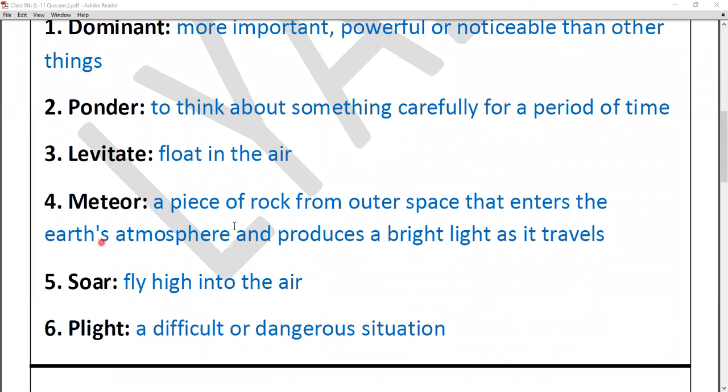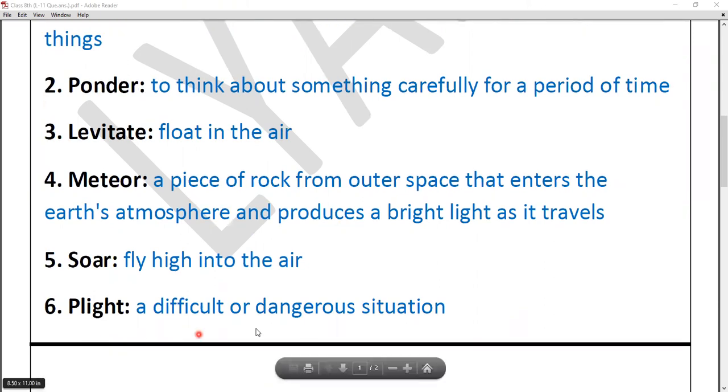Meteor, which means a piece of rock from outer space that enters the earth's atmosphere and produces a bright light as it travels. Next, fifth one is Soar, which means fly high into the air. And last word meaning is Plight, a difficult or dangerous situation. So I hope these word meanings are clear to you all.